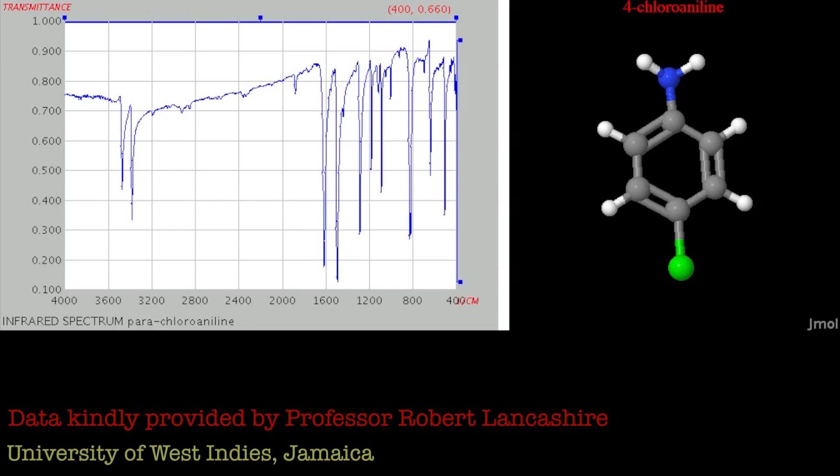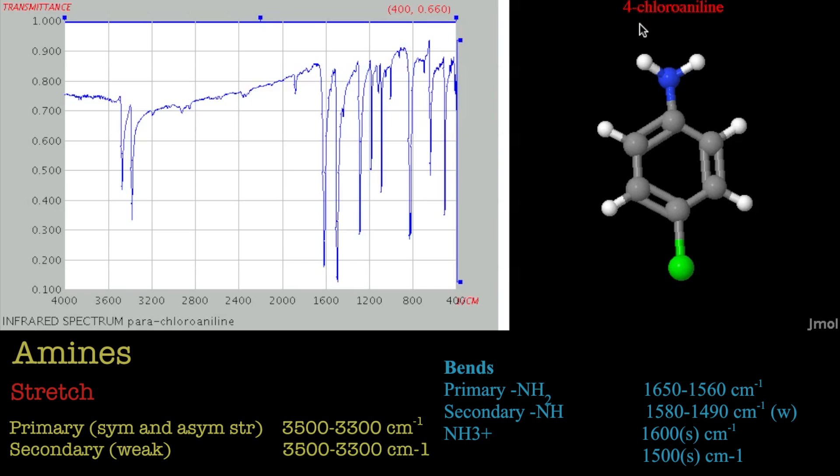Hi and welcome to this tutorial on infrared spectroscopy. In this tutorial we're going to have a look at amines. I've chosen 4-chloroaniline as an example, this molecule here. It's an aromatic amine, so chemically it's slightly different to normal amines, but spectroscopically it should be alright.